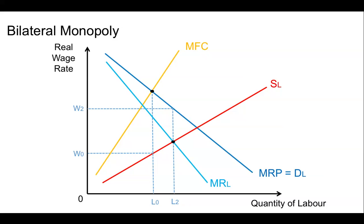Now this is assuming that the trade union wants to maximize the economic rent for their members. If they have another objective — which is to say they want to maximize the number of workers who are working in the trade union — then they wouldn't produce W2, L2. They would actually produce where supply equals demand. This is the maximum number of workers that can work, which is L1. And to get to L1, they would therefore demand a wage rate of W1.